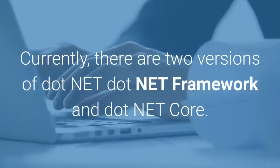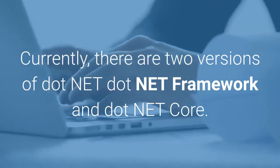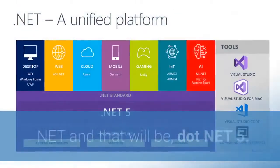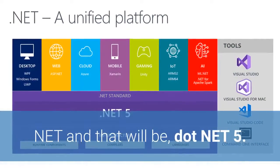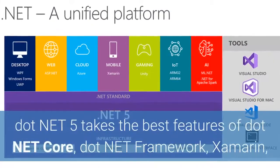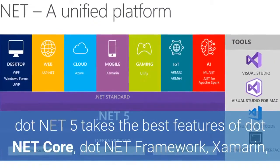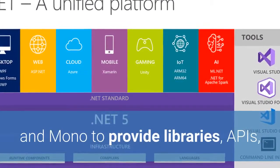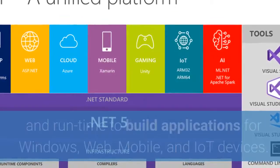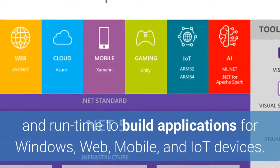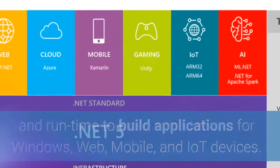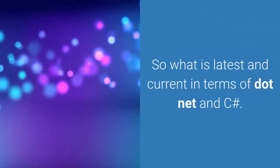Currently there are two versions of .NET: .NET Framework and .NET Core. But in the near future there is going to be only one version of .NET, and that will be .NET 5. .NET 5 takes the best features of .NET Core, .NET Framework, Xamarin, and Mono to provide libraries, APIs, and runtime to build applications for Windows, web, mobile, and IoT devices.